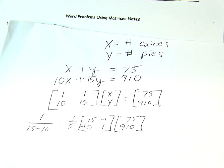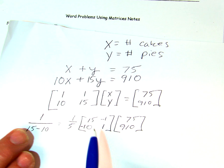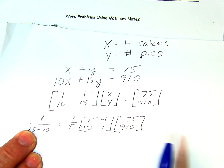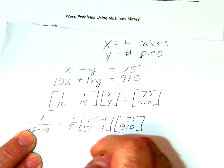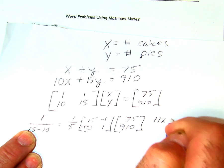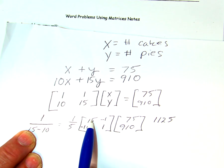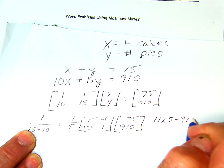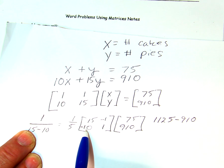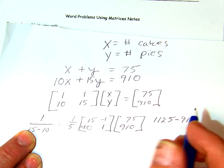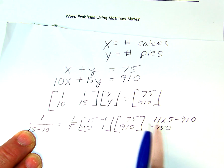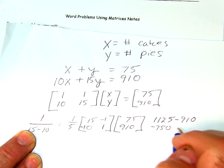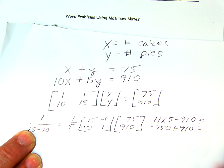And now all we have to do is multiply that times this matrix. And everybody can multiply, so let's do that. We've got 15 times 75. That equals, that's right here, 1125. And then you have negative 1 times 910. So that's minus 910. And then we have negative 10 times 75. That's negative 750. And we have 1 times 910, which is plus 910.